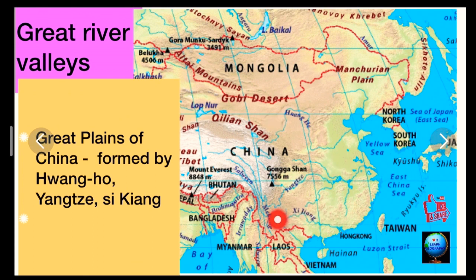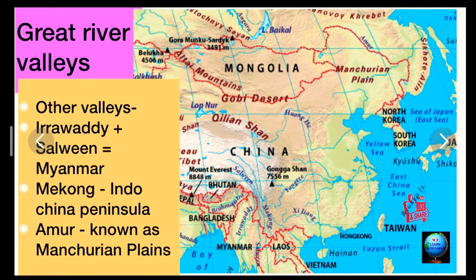The Great Plains of China are majorly formed by three major rivers: Huang He (Wango), Yangtze, and Xi Jiang (Sikyang).